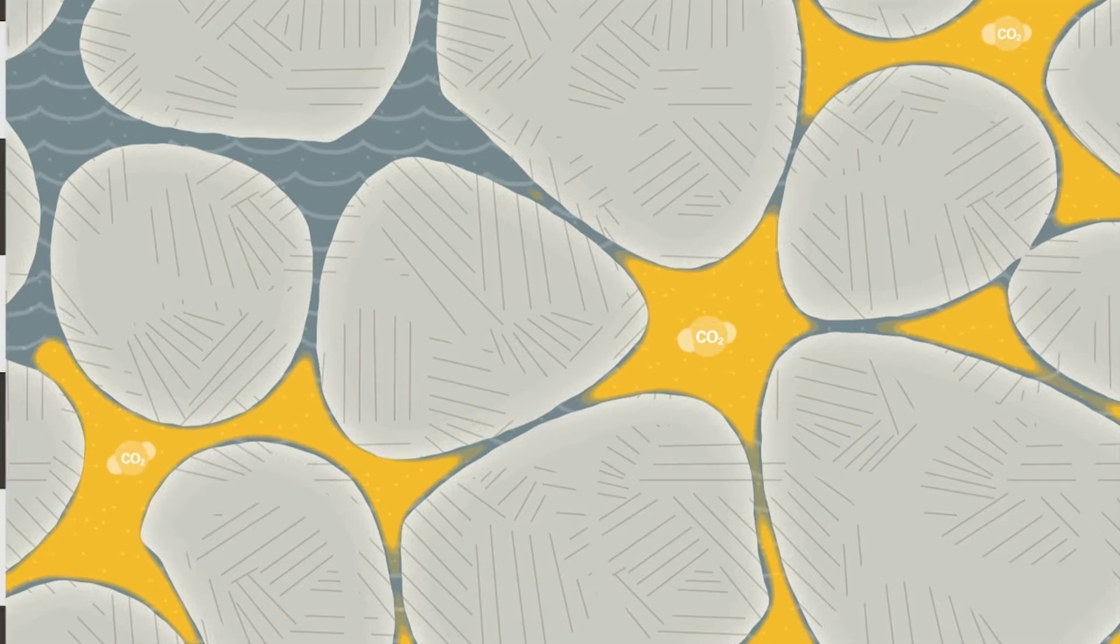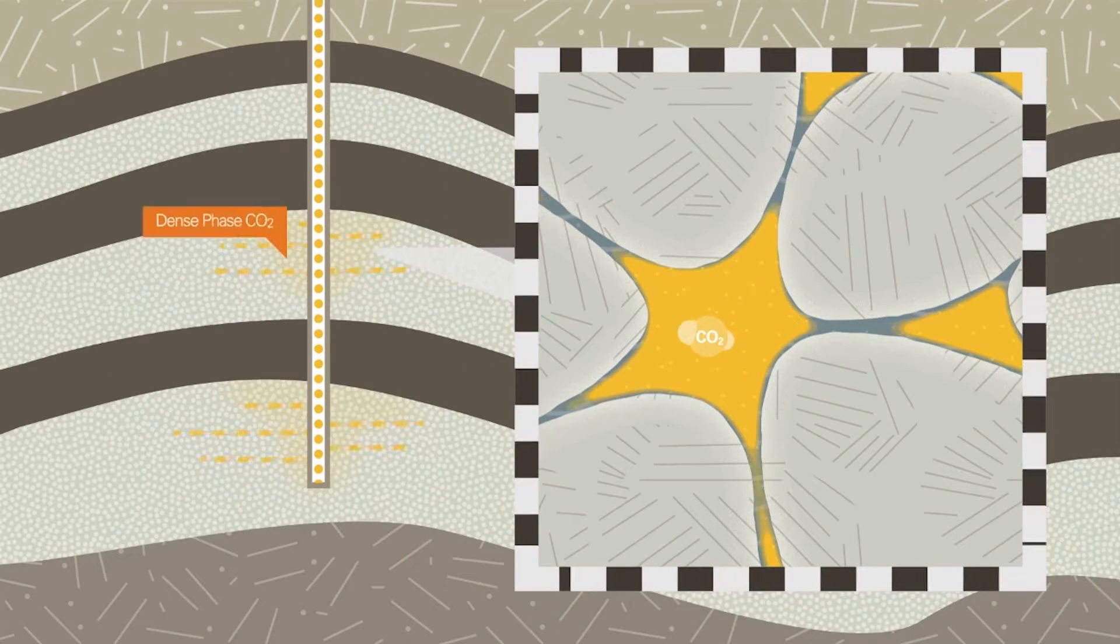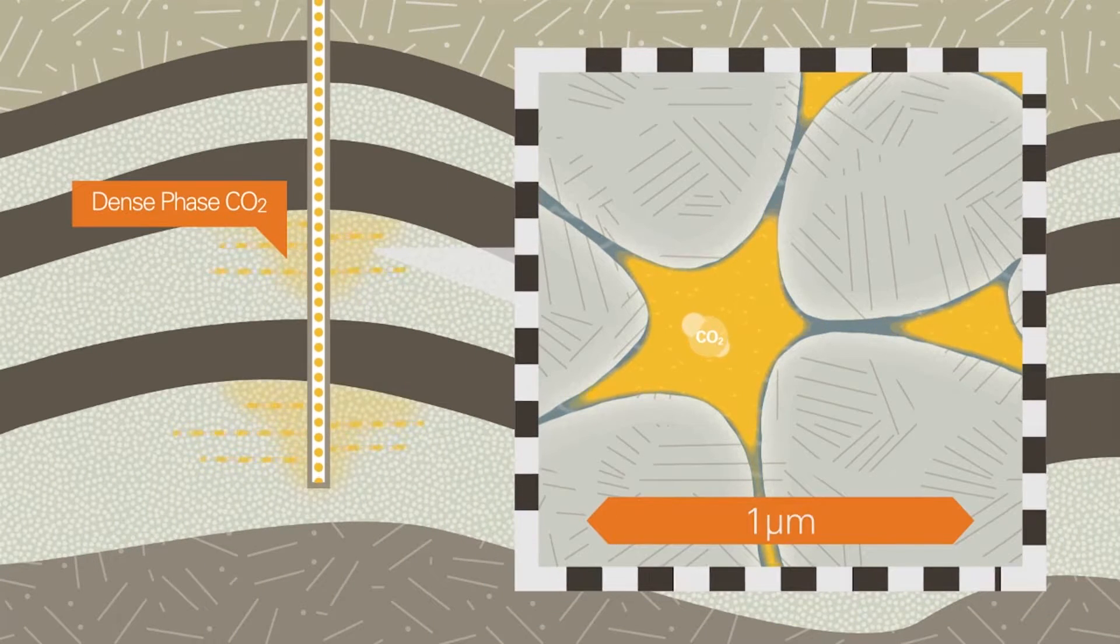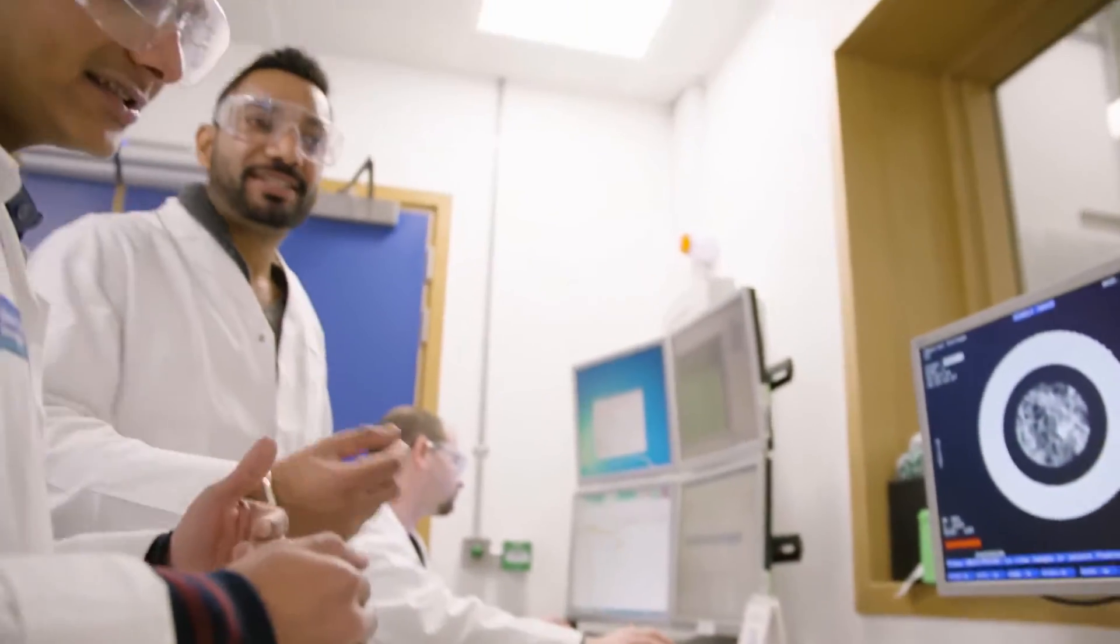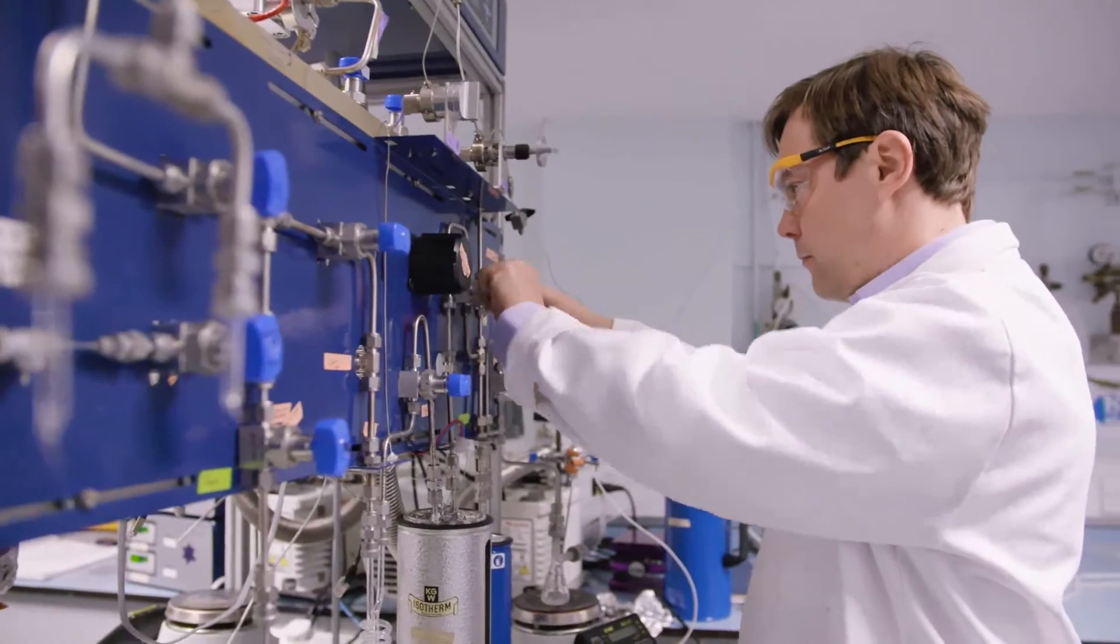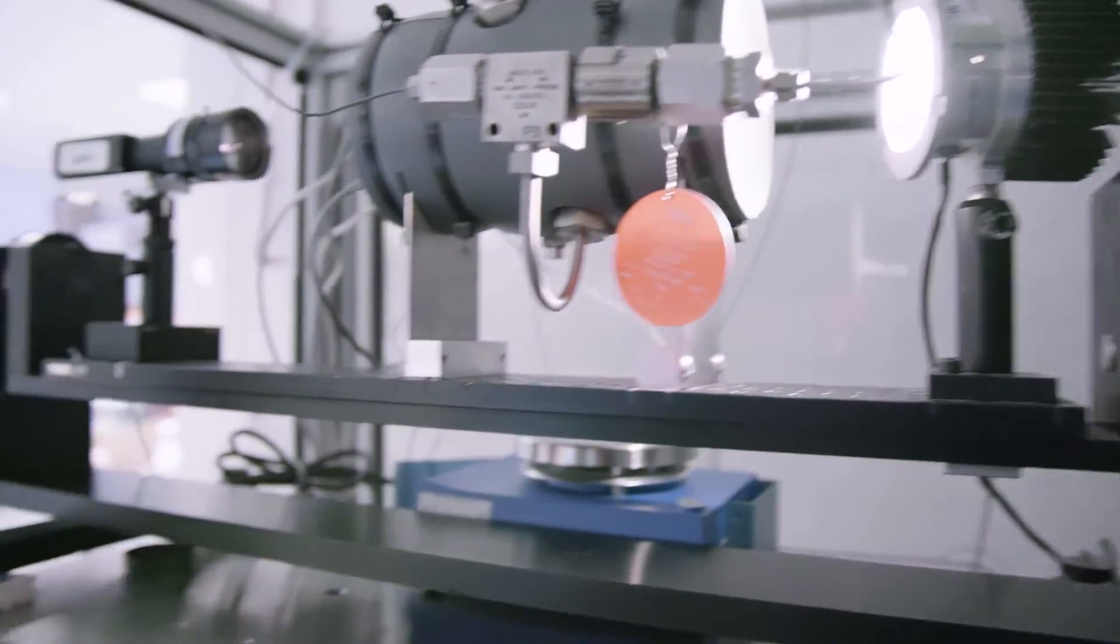If we're going to store carbon dioxide deep underground, we're talking about billions and billions of tonnes. We need to understand all the processes involved with doing that on an industrial scale. How does the carbon dioxide move underground? How can we ensure that it doesn't escape? What happens to it in the long term?